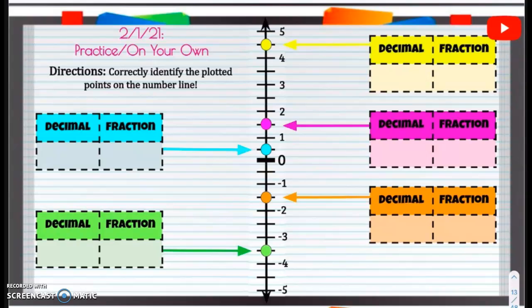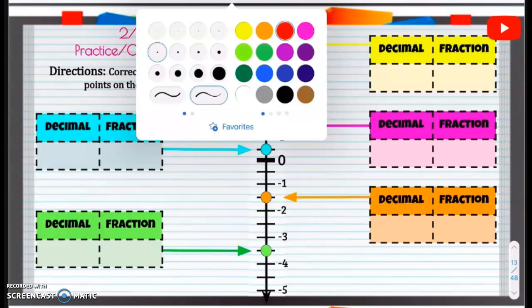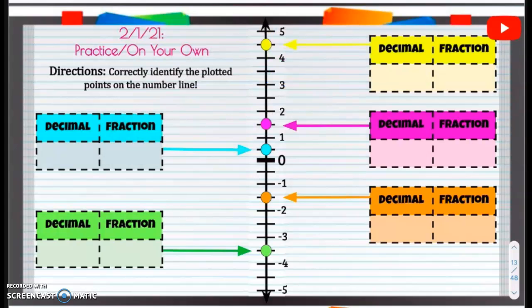On your own, slash our practice. So we're going to correctly identify the plotted points on this number line. So first of all, if we take a look at this number line, we do have some missing numbers.